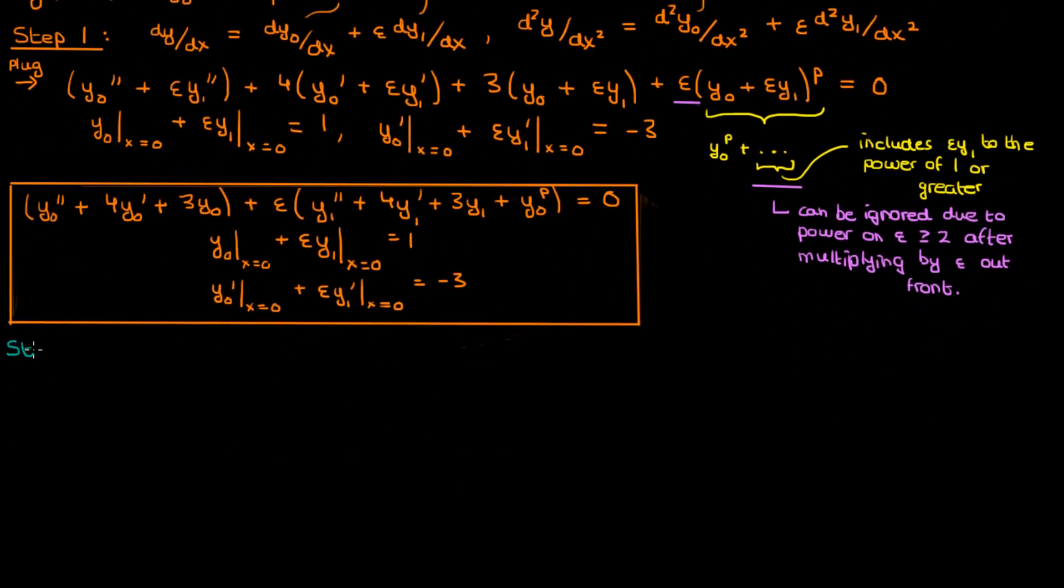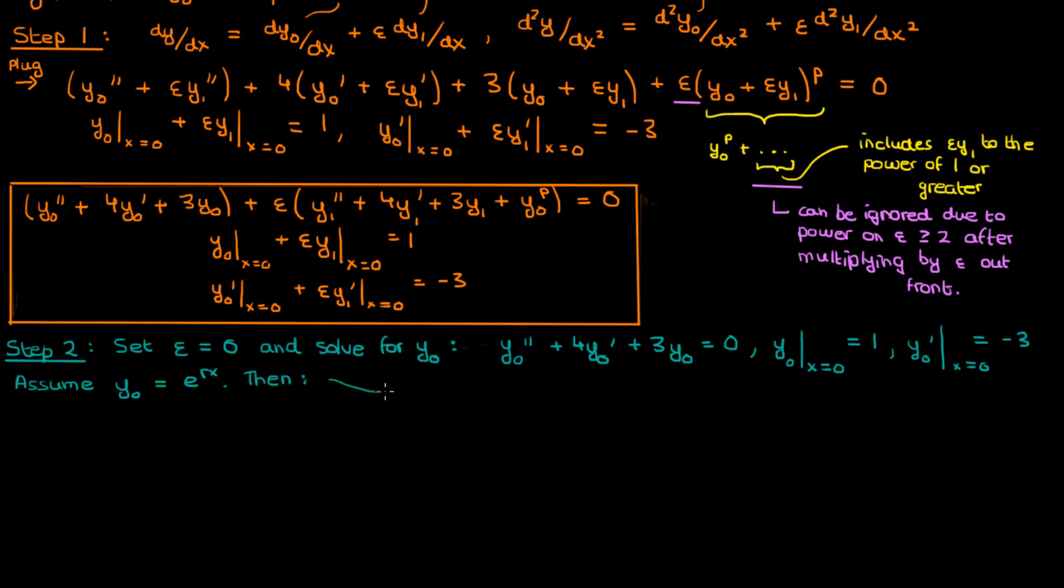Now that we've set things up, we can move on to the second step, which is to set epsilon equal to 0 in the initial value problem, and solve for y0. The way to solve this resulting problem is fairly simple. Assume y0 is an exponential of some unknown coefficient r times x. You've probably covered this in your ODEs course, but I'm going to go over it again. When we substitute this e to the rx into the differential equation, we end up with a polynomial equation that will give us two solutions for r.